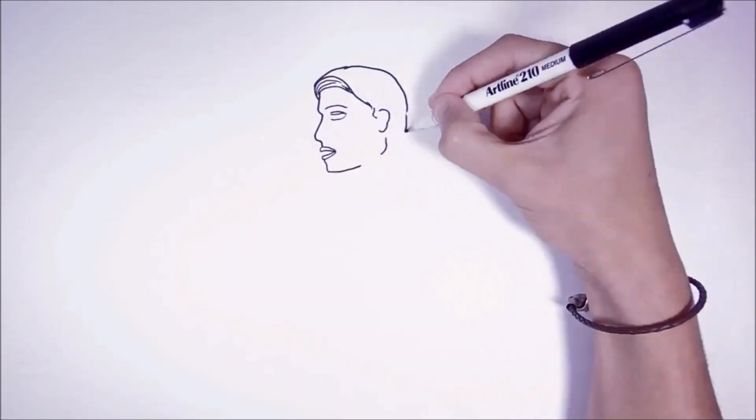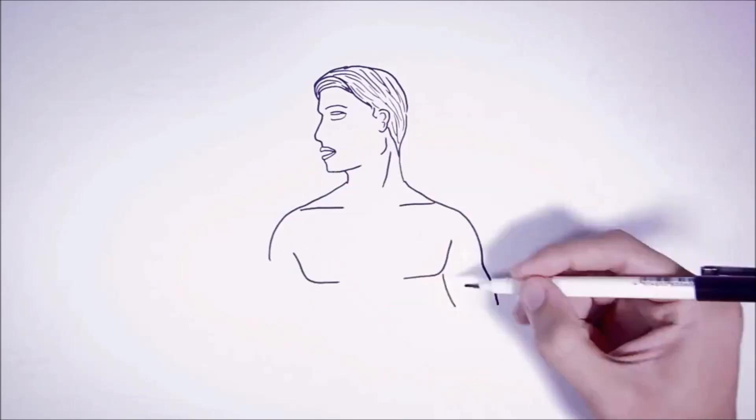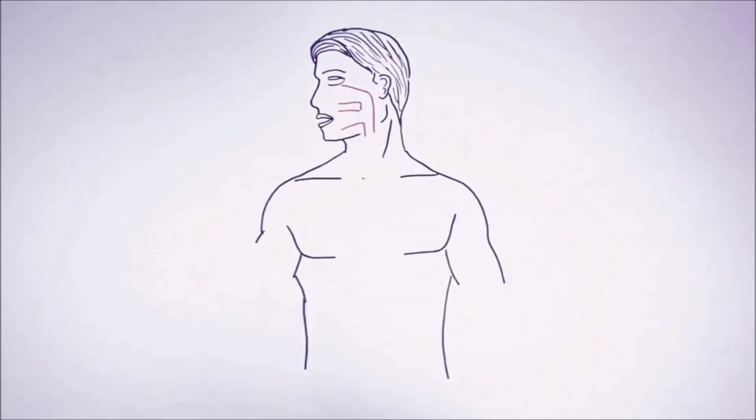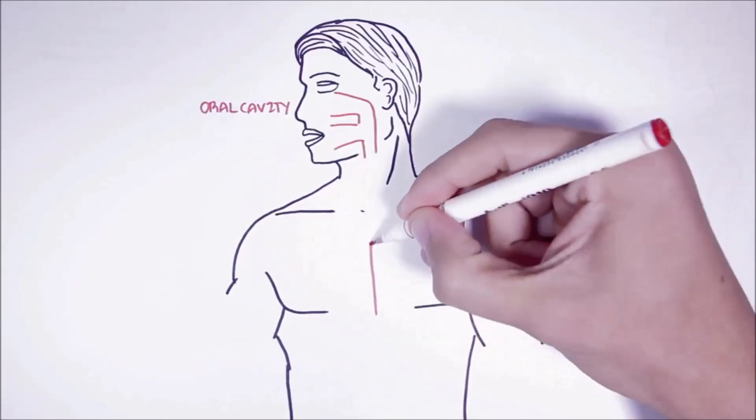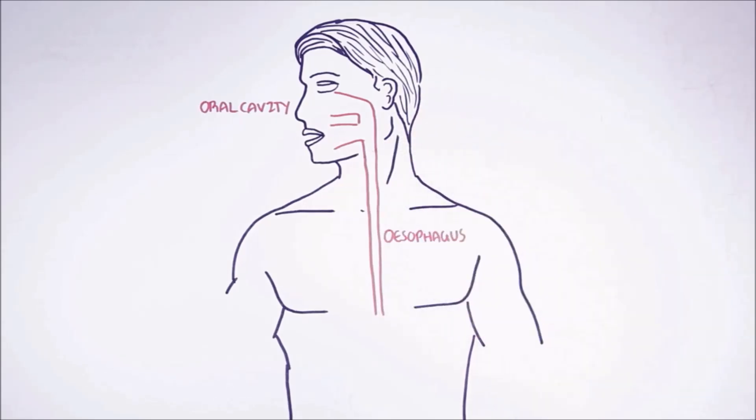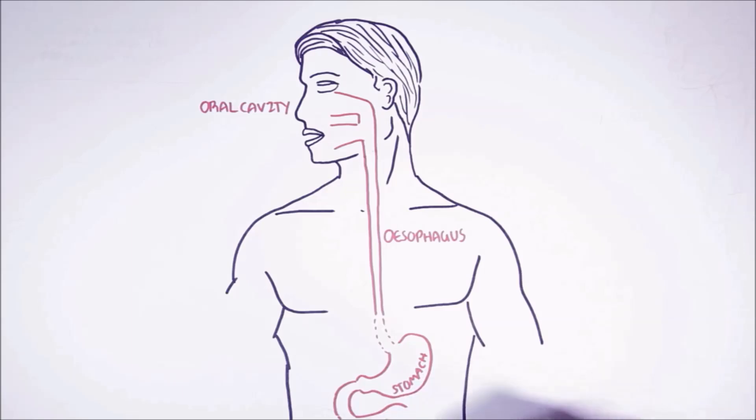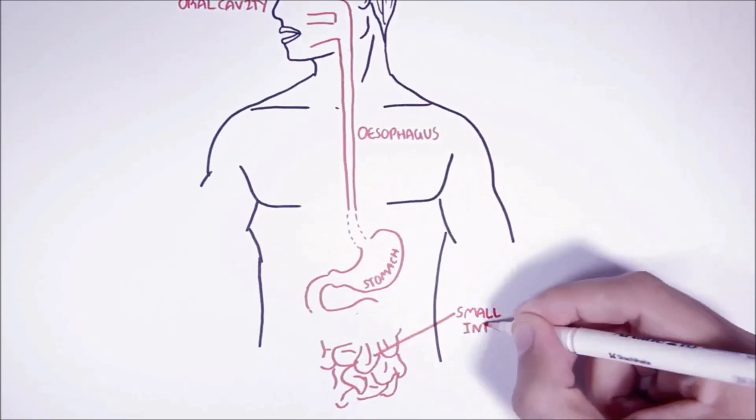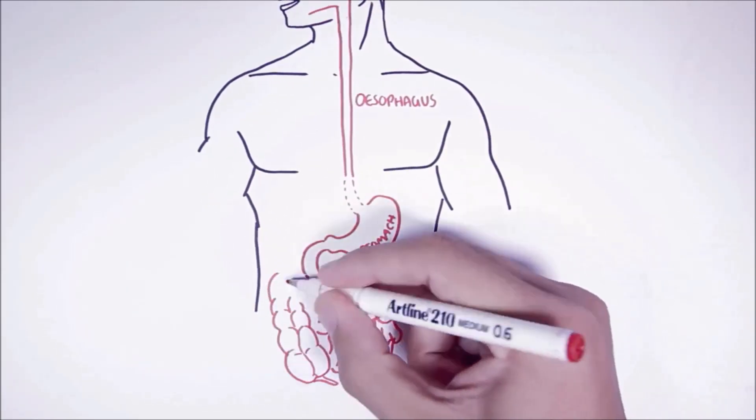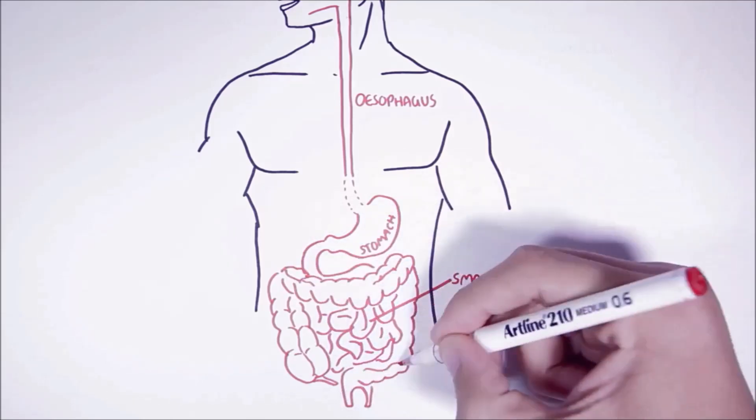The digestive tract, also known as the alimentary canal, is the pathway where food travels through after being ingested. The digestive tract consists of the mouth, esophagus, stomach, small intestine, large intestine also known as the colon, and the rectum.